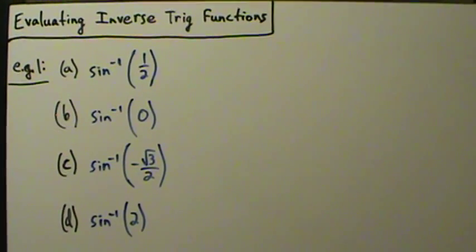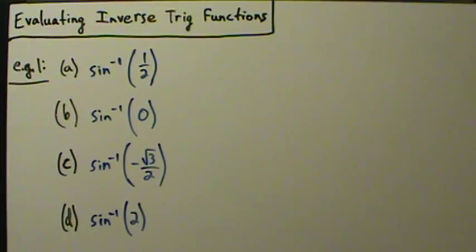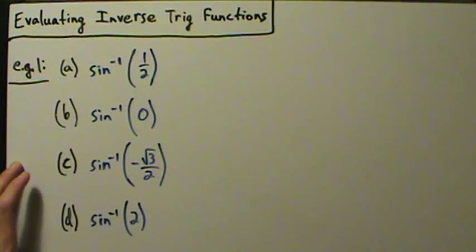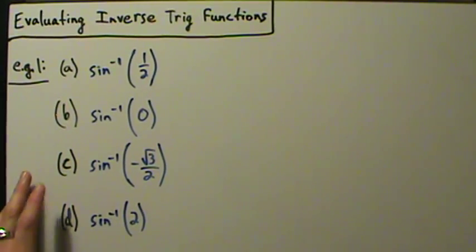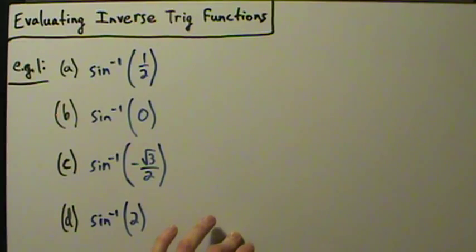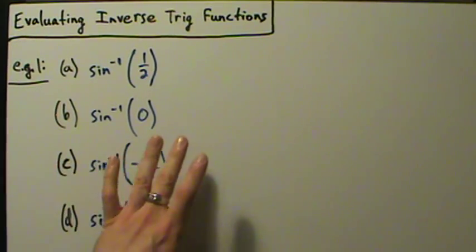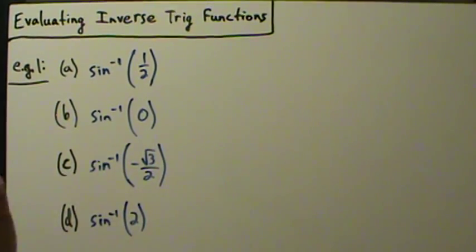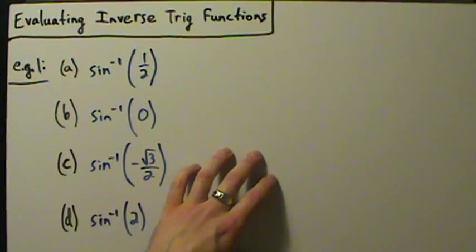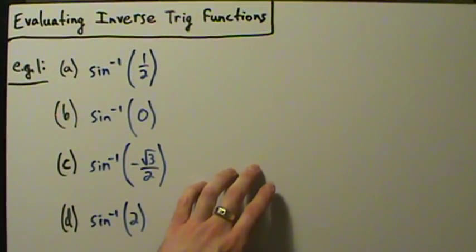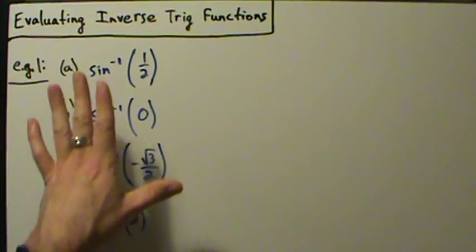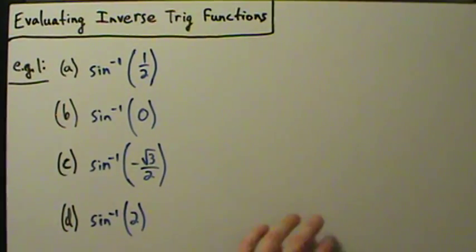Let's go ahead and talk about evaluating inverse trig functions. When you evaluate inverse trig functions you can use a calculator if the numbers aren't nice, or if the numbers are kind of nice you can just think about the unit circle. This is really just like evaluating regular trig functions but going backwards. In this video we're going to use just nice numbers where we can use the unit circle, and we'll talk about evaluating inverse trig with the calculator in a separate video.